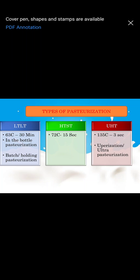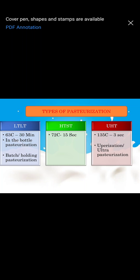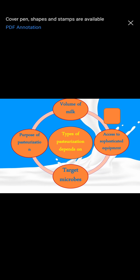Next is high temperature short time pasteurization — HTST — wherein the milk is heated to around 72 degree centigrade, which is maintained for 15 seconds. Please note: it is not 15 minutes, it is 15 seconds. The next kind is UHT, that is ultra high temperature pasteurization, where the temperature is 135 degree centigrade and the time duration is just 1 to 3 seconds. This is also called upperization or ultra pasteurization. All these methods have their own advantages and disadvantages.